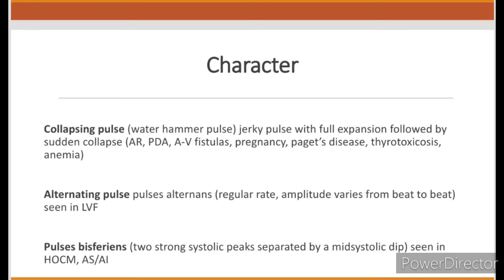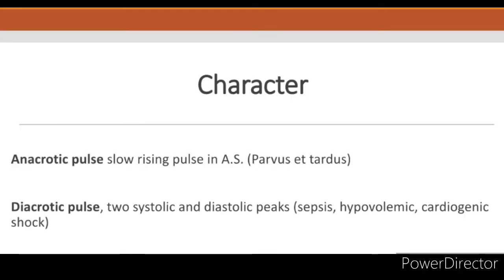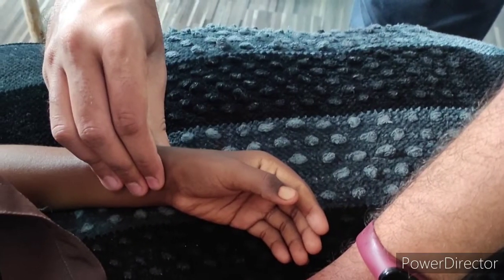In pulsus alternans, there are stronger and weaker beats alternately, seen in left ventricular failure. Pulsus bisferiens has two strong systolic peaks separated by a mid-systolic dip. An anacrotic pulse has a slow rising pulse seen in aortic stenosis. Dicrotic pulse has two systolic and diastolic peaks and is seen in sepsis, hypovolemia, and cardiogenic shock. All these are abnormal pulse characters.